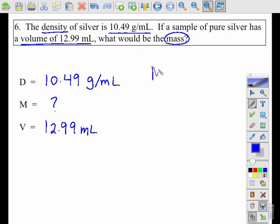Again, use my density triangle and find that M mass equals density times volume this time. So M is going to be 10.49 times 12.99.